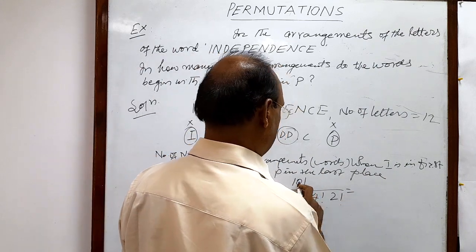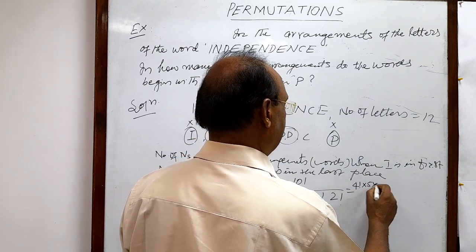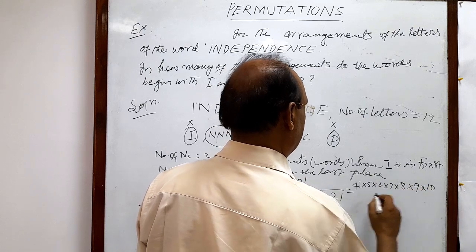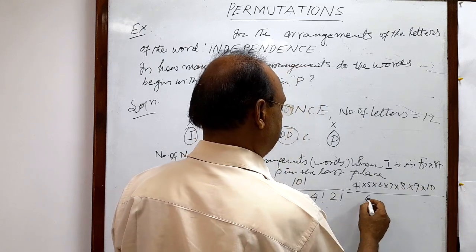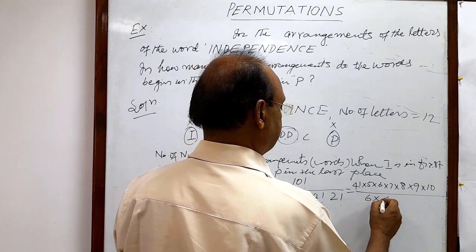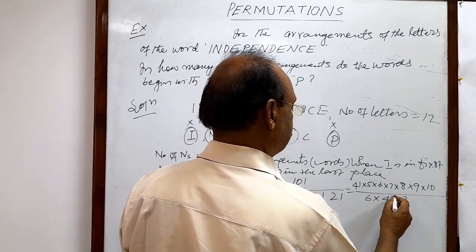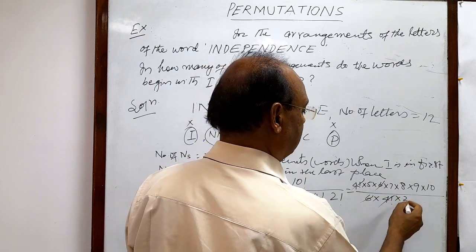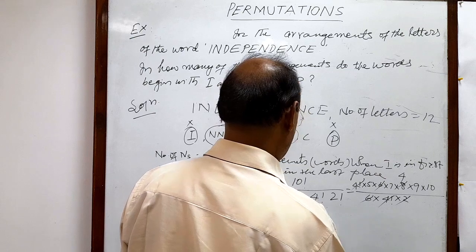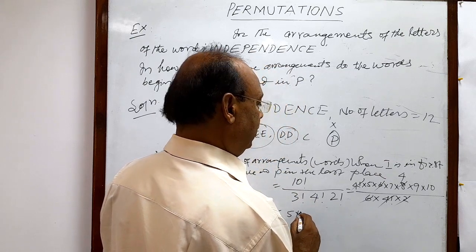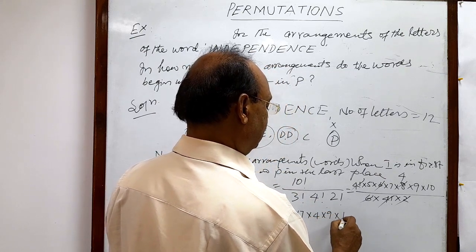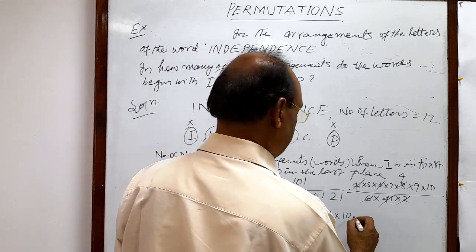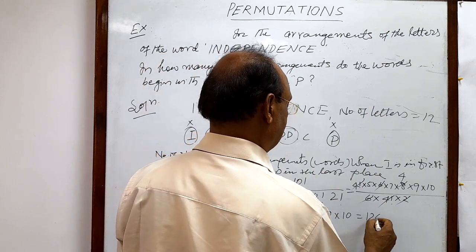Now we will simplify it and get the answer. This can be written as 4 factorial into 5 × 6 × 7 × 8 × 9 × 10, divided by: 3 factorial is 6, 3 × 2 is 6; this is 4 factorial; and 2 × 1 is 2. This 4 factorial will be cancelled out, this 6 will be cancelled out, and this 2 will also be cancelled out — 2 × 4 gives 8. So now we multiply 5 × 7 × 4 × 9 × 10.